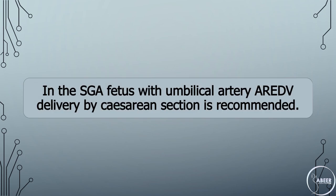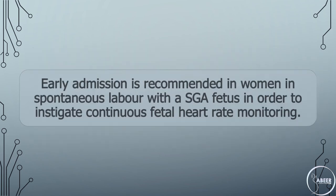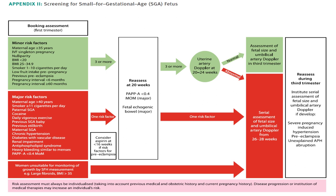How should the SGA fetus be delivered? In the SGA fetus with umbilical artery absent or reversed end-diastolic velocity, delivery by cesarean section is recommended. In the SGA fetus with normal umbilical artery Doppler or with abnormal umbilical artery pulsatility index but end-diastolic velocity present, induction of labor can be offered, but rates of emergency cesarean section are increased and continuous fetal heart rate monitoring is recommended from the onset of uterine contractions. Early admission is recommended in women in spontaneous labor with a SGA fetus in order to instigate continuous fetal heart rate monitoring.